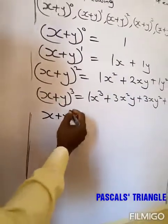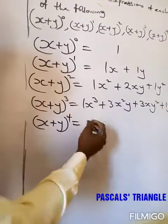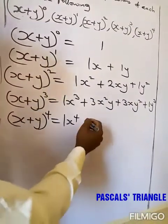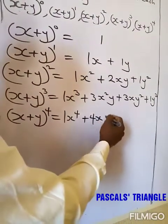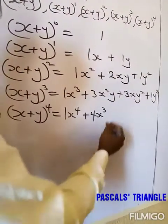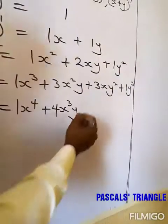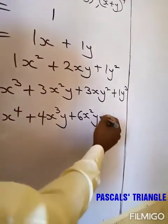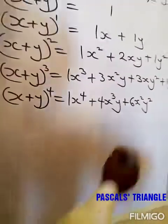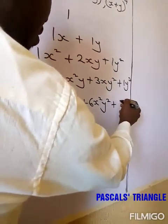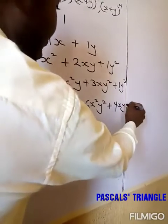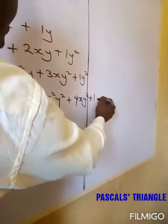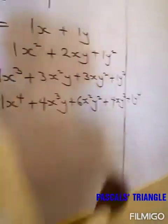Then (s + y) raised to 4 gives us 1s raised to 4, plus 4s raised to 3·y, plus 6s raised to 2·y raised to 2, plus 4s·y raised to 3, plus 1y raised to 4.